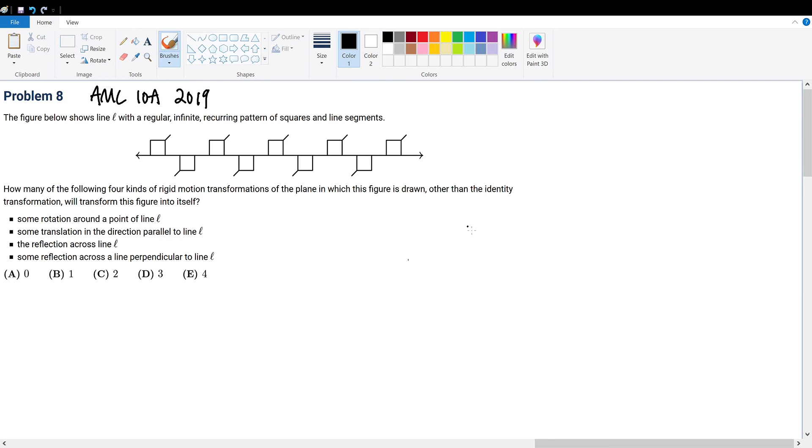A couple of key concepts to understand here. What is the identity transformation? Well, identity transformation just means a transformation that doesn't change anything. For example, if I have a segment from (1,2) to (3,2), an identity transformation could be rotating this segment about its midpoint 360 degrees. That would be an identity transformation because it would not change the segment at all.